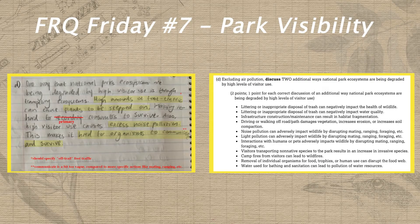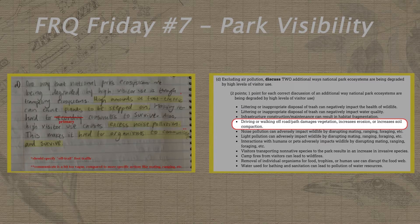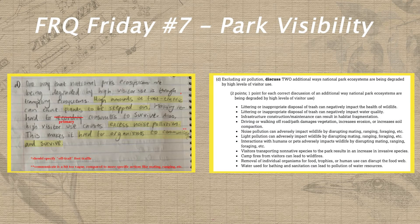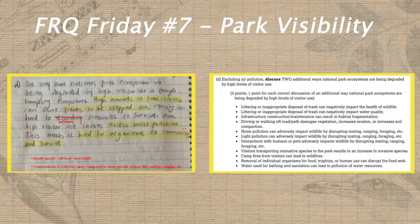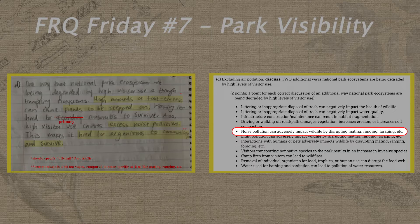In part D, Hannah was again really close to earning two points, but was just a touch off on both of her answers. Her first answer lacks the clarification that the high foot traffic she's talking about is off-trail foot traffic, since high visitor traffic on designated walkways wouldn't damage plants. She also made a slight mistake in identifying secondary consumers as relying on plants for food rather than primary consumers. In her second answer, Hannah was so close to earning the noise pollution point from the rubric, but communication just wasn't precise enough of an animal behavior. She would have needed to identify a slightly more specific action that's disrupted by noise pollution, such as mating or foraging.